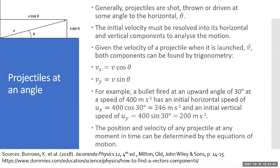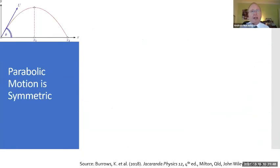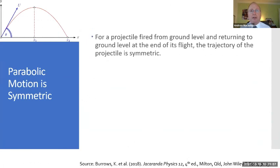The position and velocity of any projectile at any moment in time can be determined by the equations of motion. And this is the key point. This diagram is very useful to say that parabolic motion is symmetric. For a projectile fired from ground level and returning to ground level at the end of its flight, the trajectory of the projectile is symmetric. Now symmetric is really important because we can use properties of symmetry to solve some of the problems.